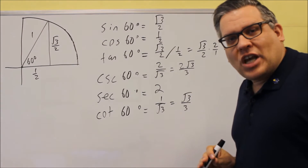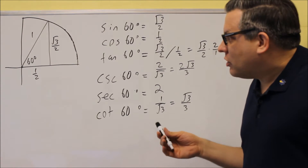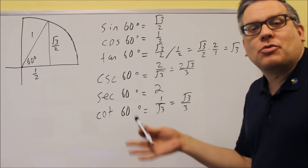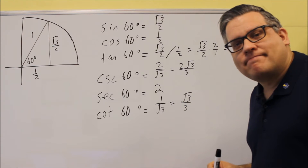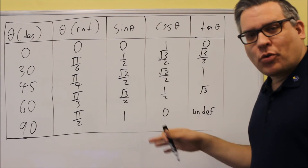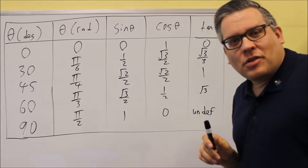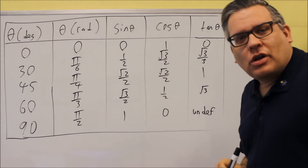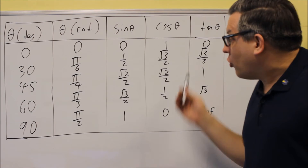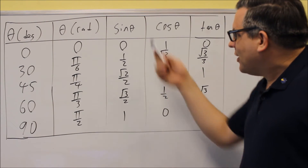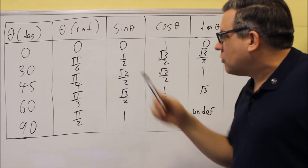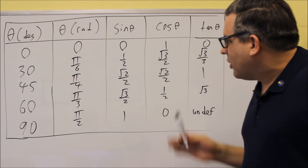Now that we've looked at all three special angles, let's put everything onto a table so it's all organized. I'm including 30, 45, and 60 degrees along with 0 and 90 degrees, so we have all angles between 0 and 90. The table shows sine, cosine, and tangent along with their equivalent radian measurements. For example, sine of 30 degrees is 1 half — just find 30 degrees and where sine intersects, you get that exact value.